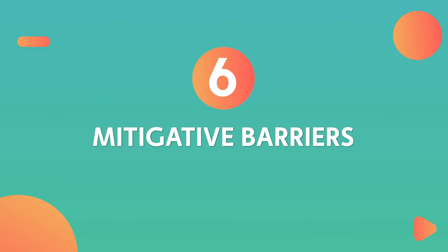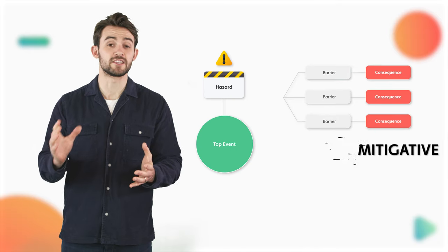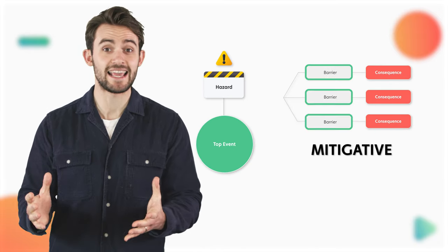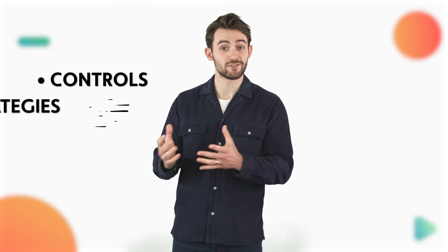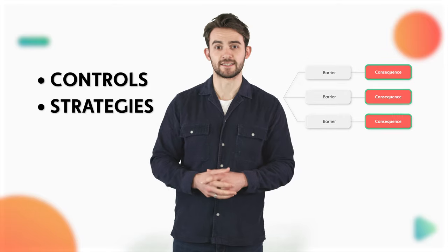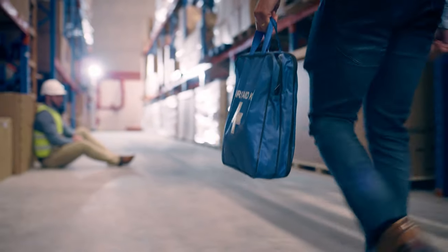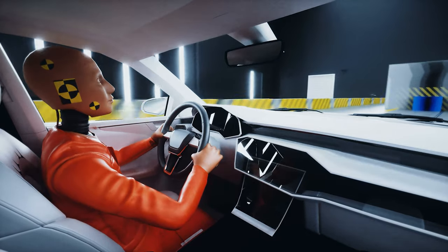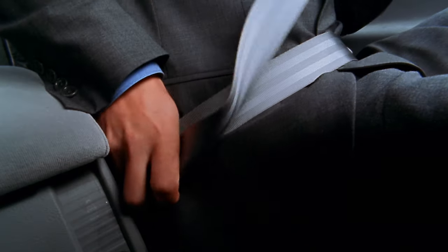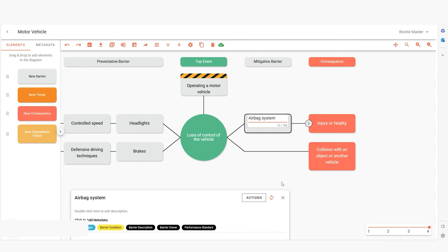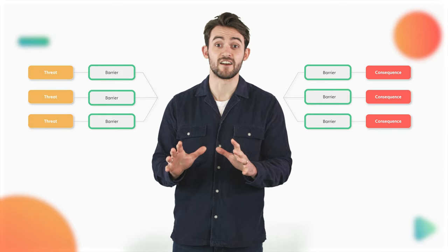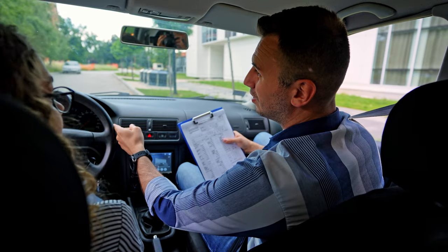Now, number six: mitigative barriers. Mitigative barriers sit between the top event and consequences on the right-hand side, and come into play after the top event has occurred. They are controls and strategies aimed at reducing the impact of the consequences, playing a crucial role in minimising harm and facilitating an effective response to the incident. In the context of road safety, an example of a mitigative barrier would be the airbag system or a seatbelt, which could both prevent or mitigate injuries or loss of life in the event of a crash. It's important to note that some barriers can serve both preventative and mitigative roles — for example, defensive driving techniques can both prevent a driver from losing control of the vehicle and mitigate the consequences if they do lose control.